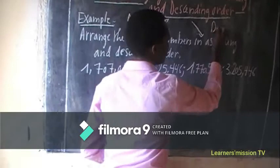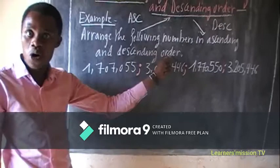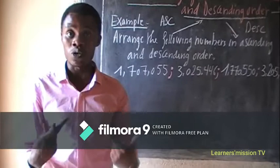Ascending, then descending. So here I have a question: arrange the following numbers in ascending and descending order. To avoid confusion, we can use a place value table. You record those numbers in a place value table.